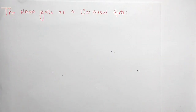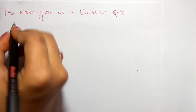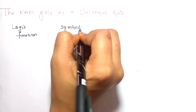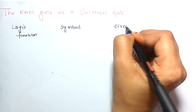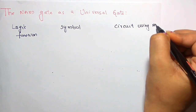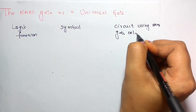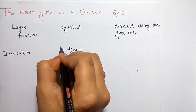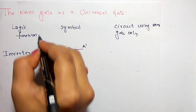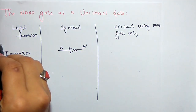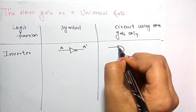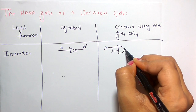Now we will see the NAND gate as a universal gate. The table shows the logic function, the symbol, and the circuit using NAND gates only. If the logic function is an inverter, the symbol shows input A with output A dash. To implement the inverter using only NAND gates, you connect both inputs together, and taking that through a NAND gate gives you A dash.